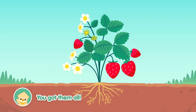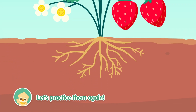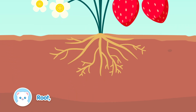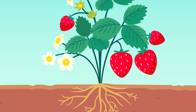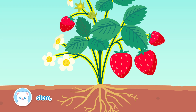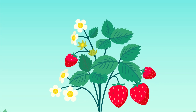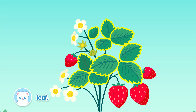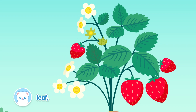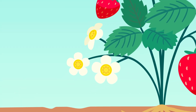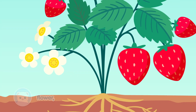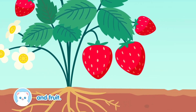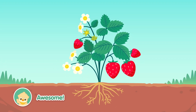You got them all! Let's practice them again! Root. Stem. Leaf. Leaf. Flower. And fruit. And fruit. Awesome!